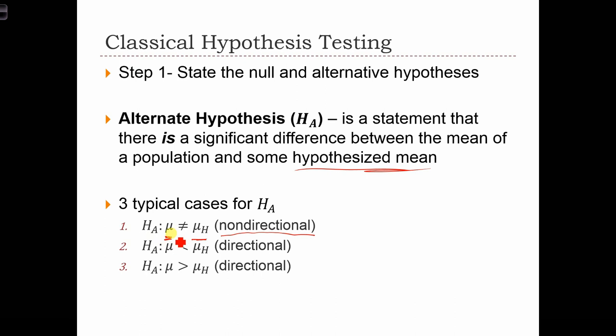The population mean can be greater than the hypothesized mean or it can be less than the hypothesized mean. The two directional cases here restrict the alternative hypothesis to either mu less than the hypothesized mean or mu greater than the hypothesized mean.